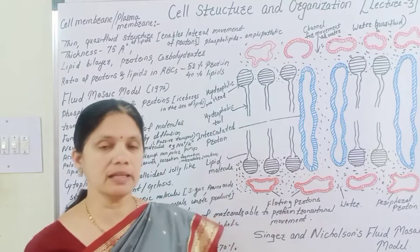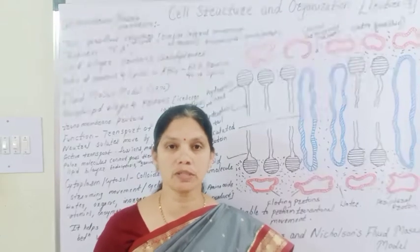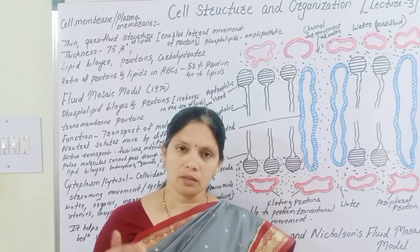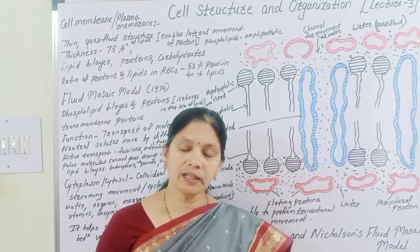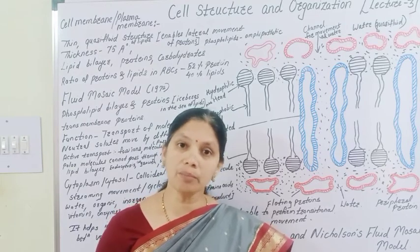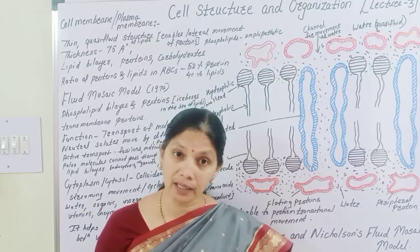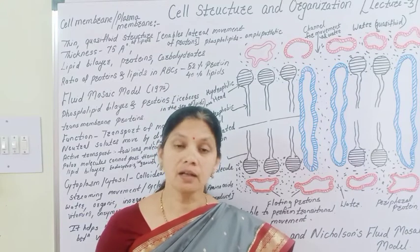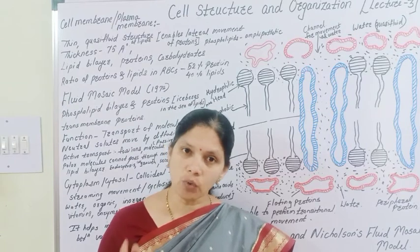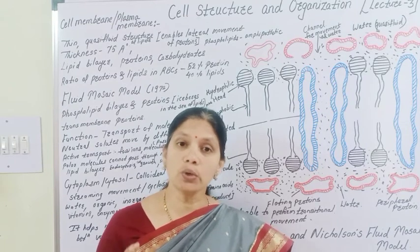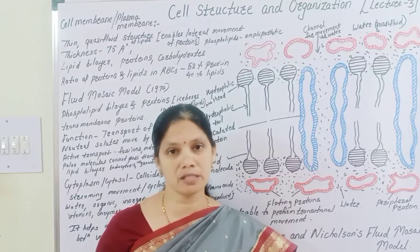In the previous lecture we already discussed about the structure of the cell wall. In plant cells, the cell wall is present and inner to the cell wall, the cell membrane is present. In animal cells, the cell wall is absent and only the plasma membrane or cell membrane is present.